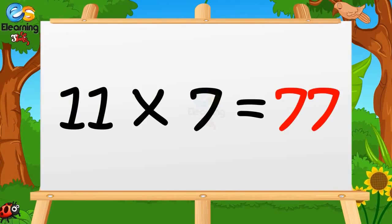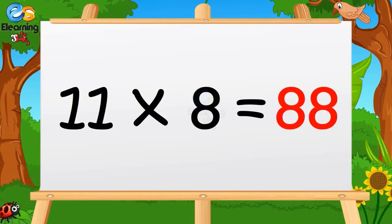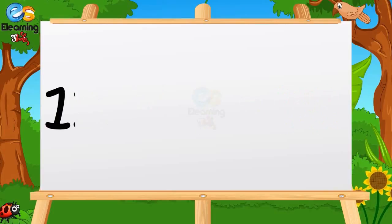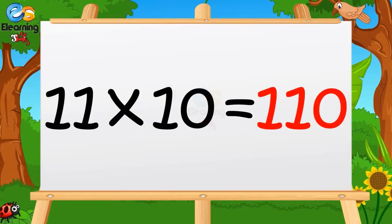11 sevens are 77. 11 eights are 88. 11 nines are 99. 11 tens are 110.